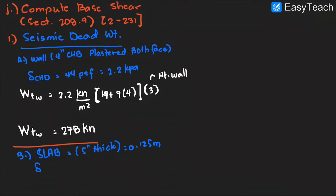The unit weight of concrete is 23.57 kilonewton per cubic meter, basically 23.6 kilonewton per cubic meter. We know the thickness of the slab. If there is water on the floor area, you also need to compute the weight of the water. So: 23.6 kN/m³.